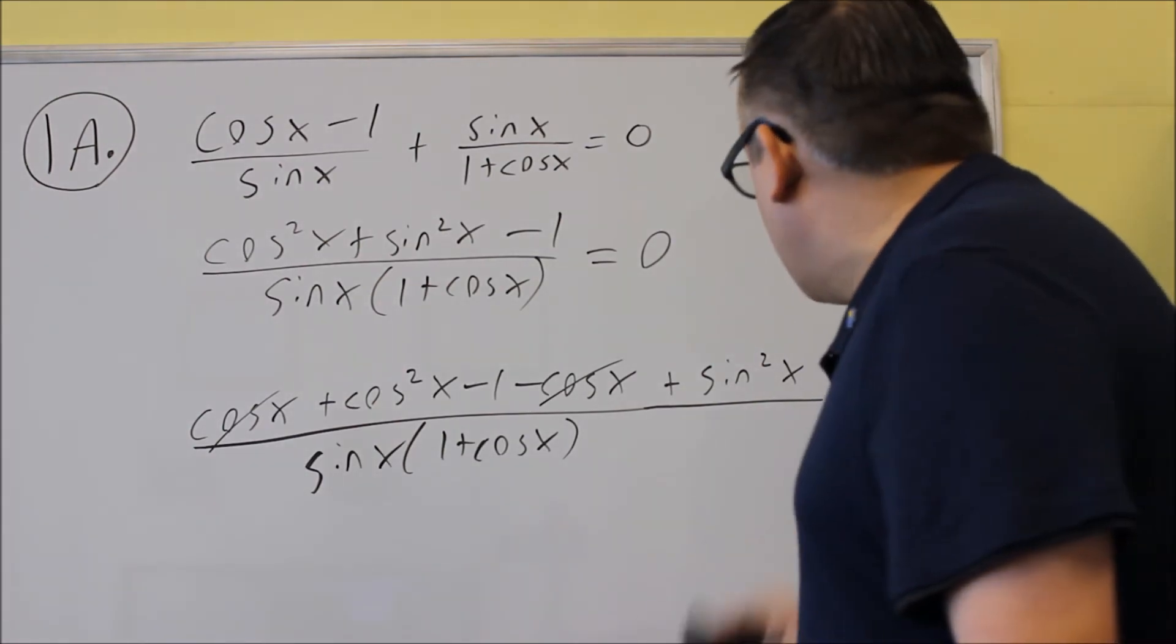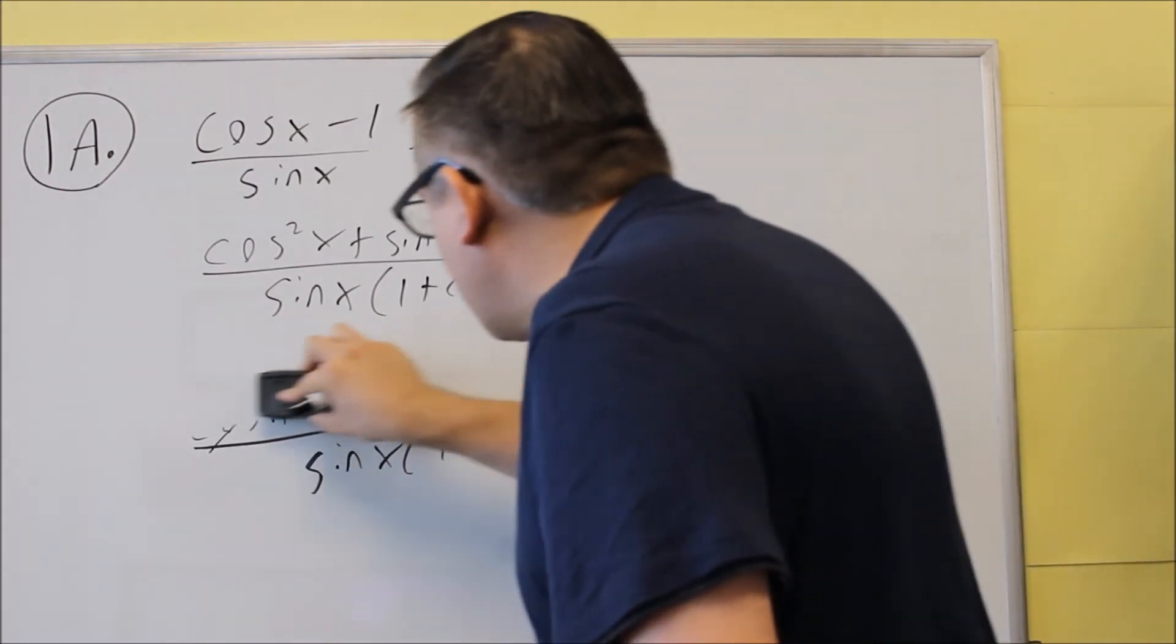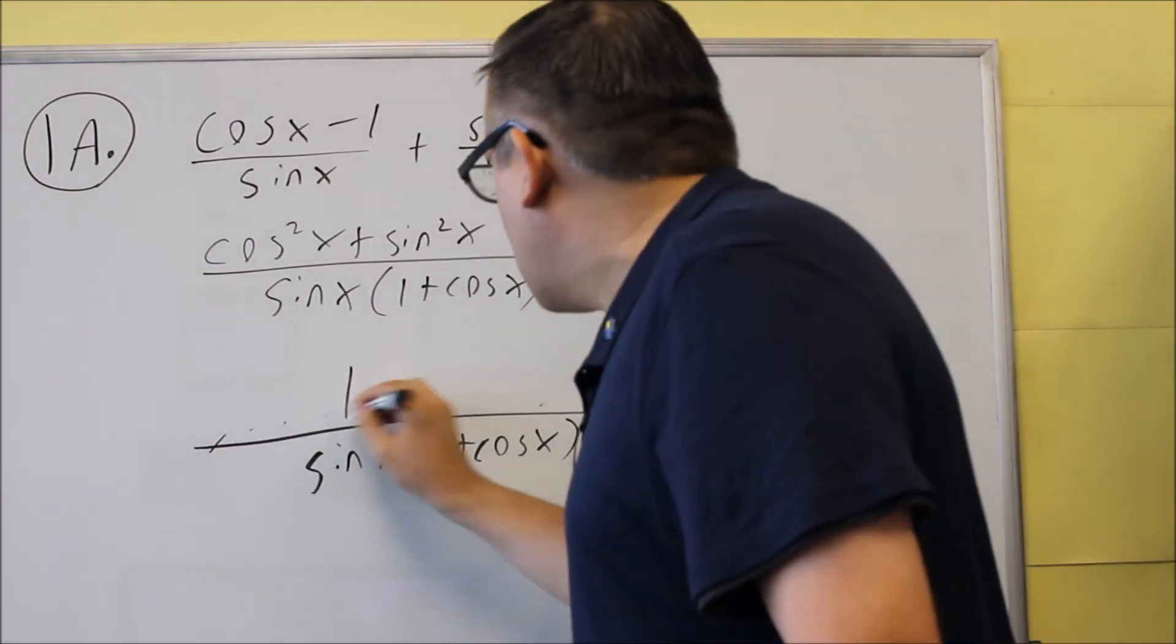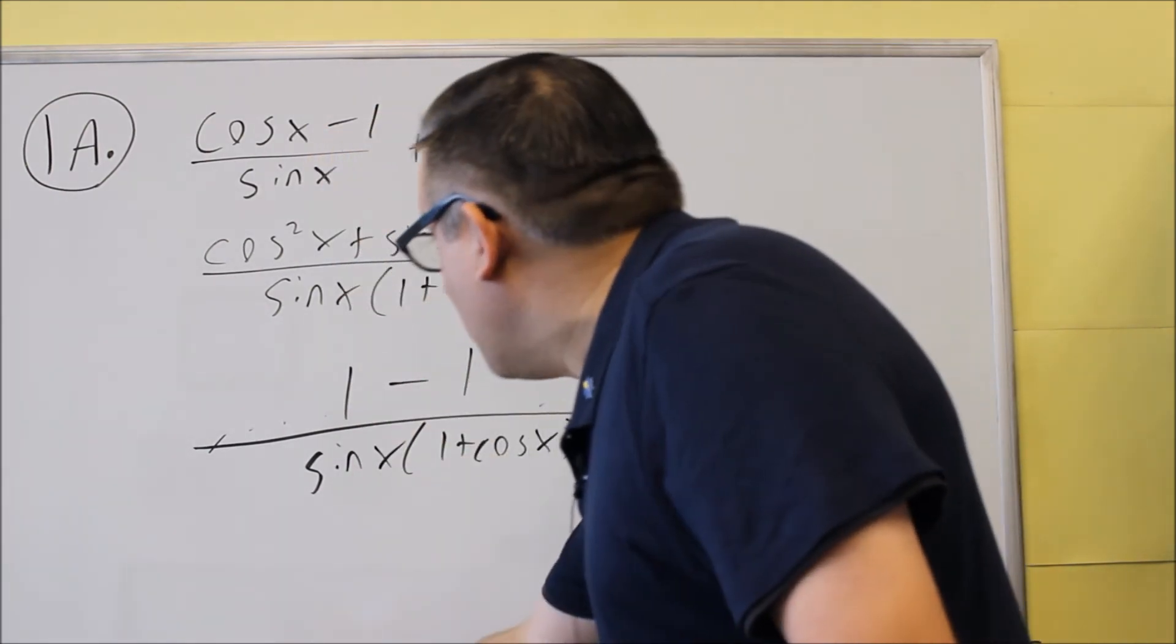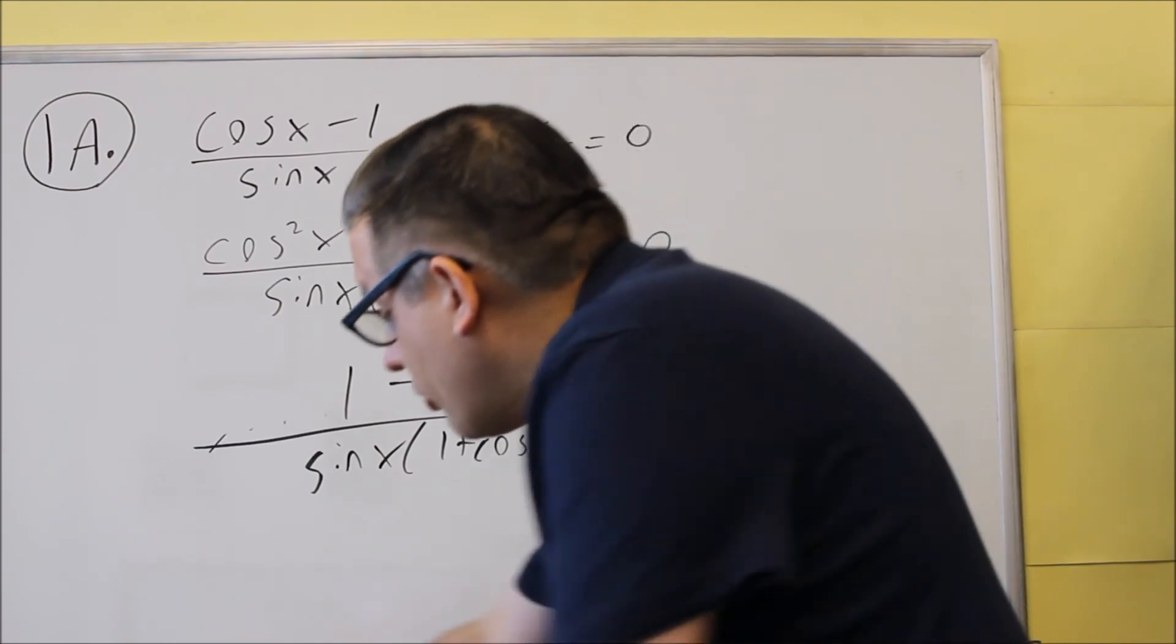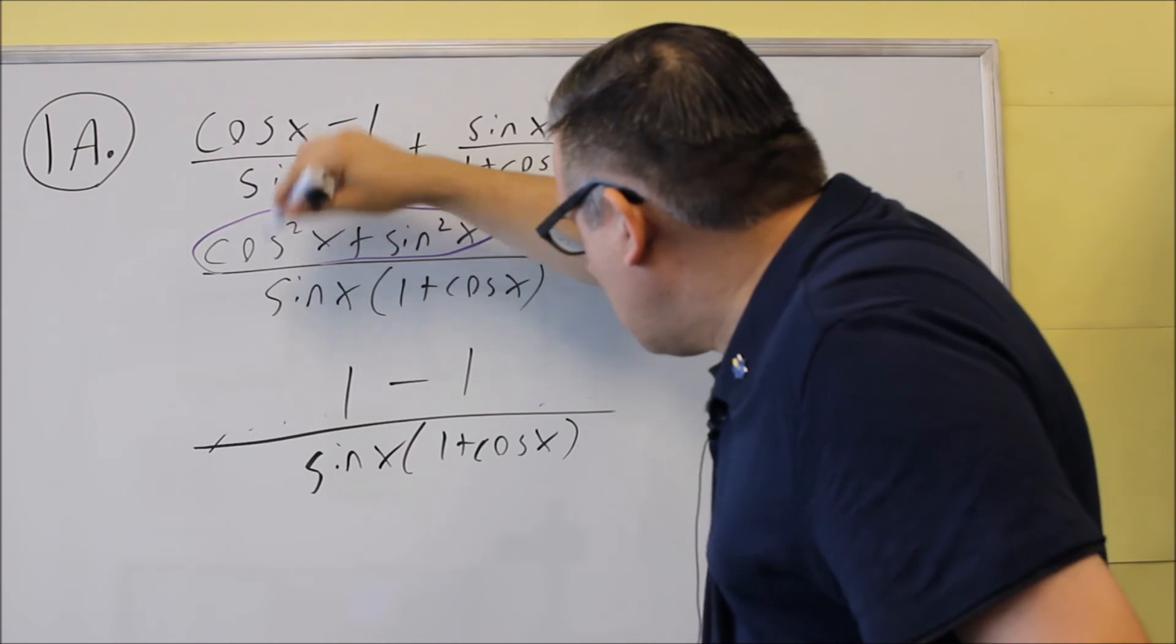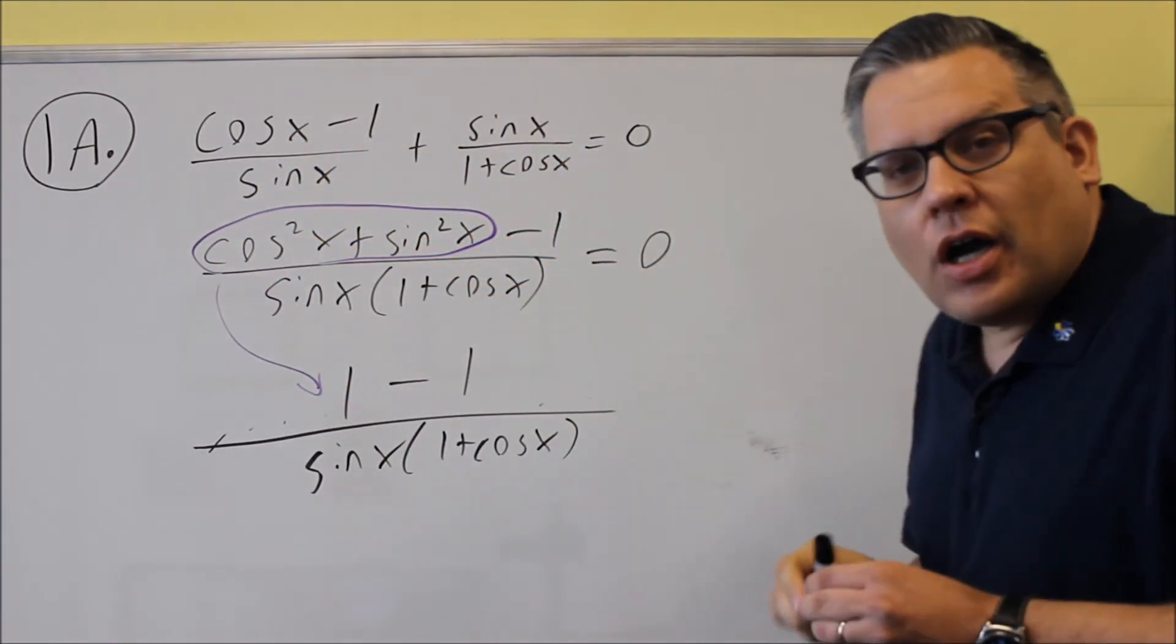So when I come down to the next step here, what I'll have, still got the same denominator on the bottom, this will be a 1. So I'll use this in a different color here. So all this circled, that all turns into a 1 down below.